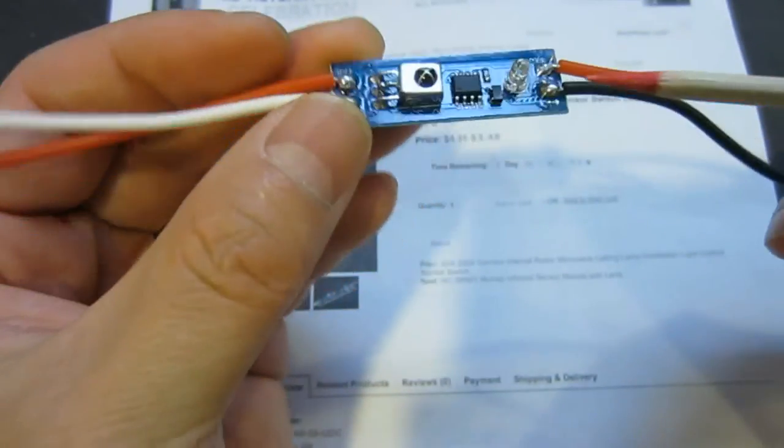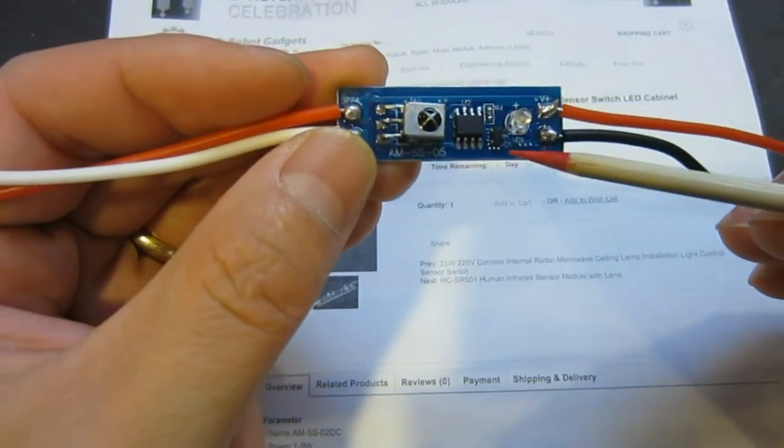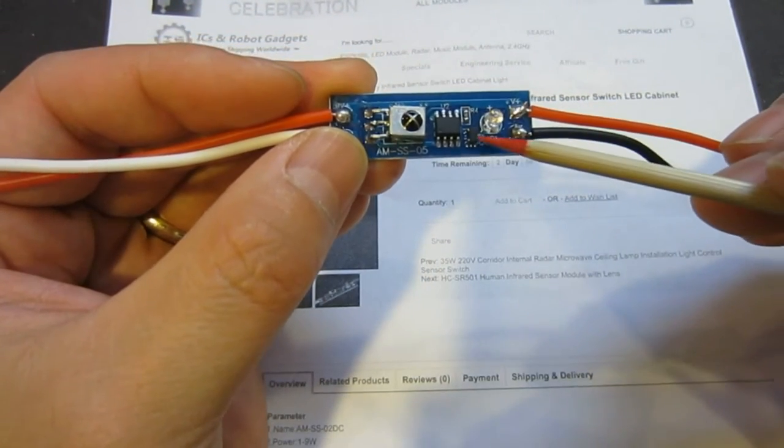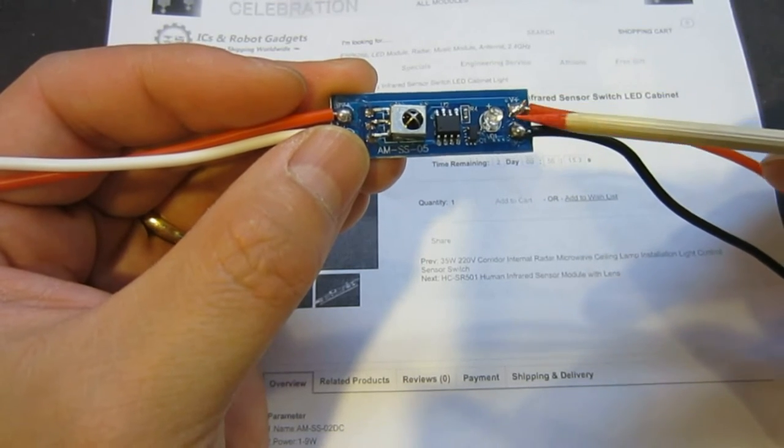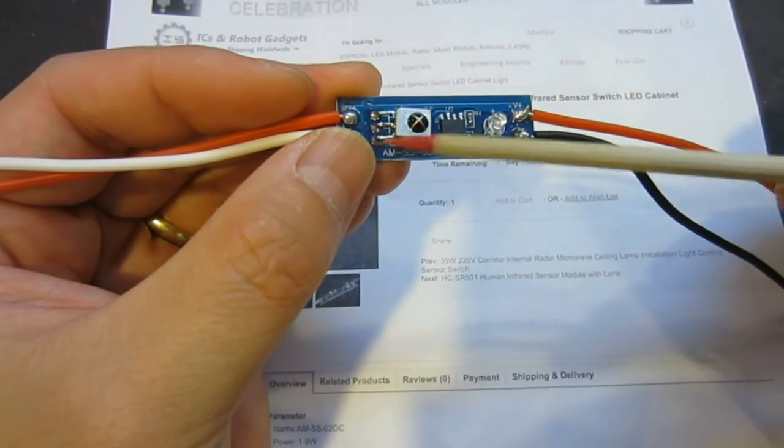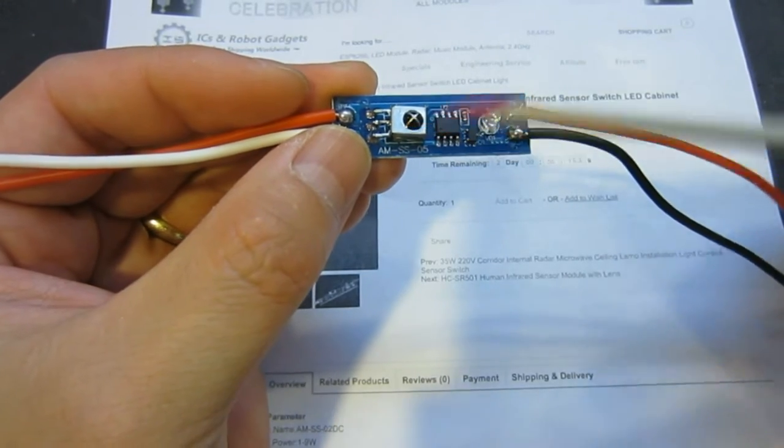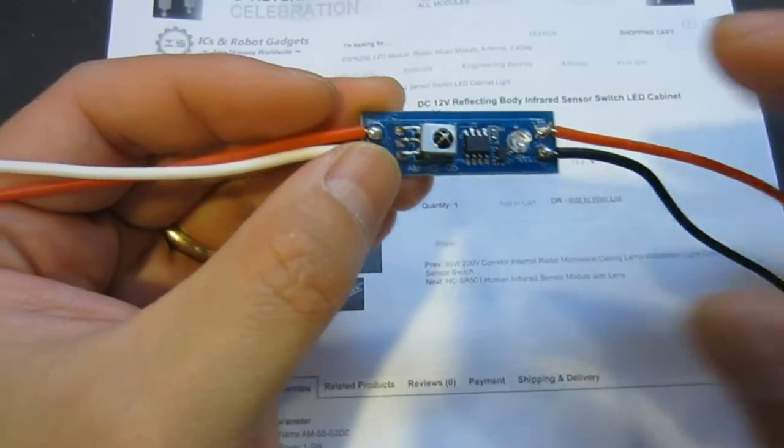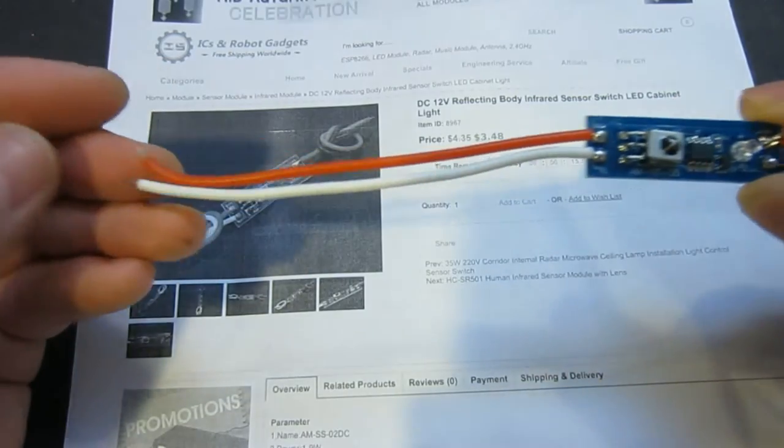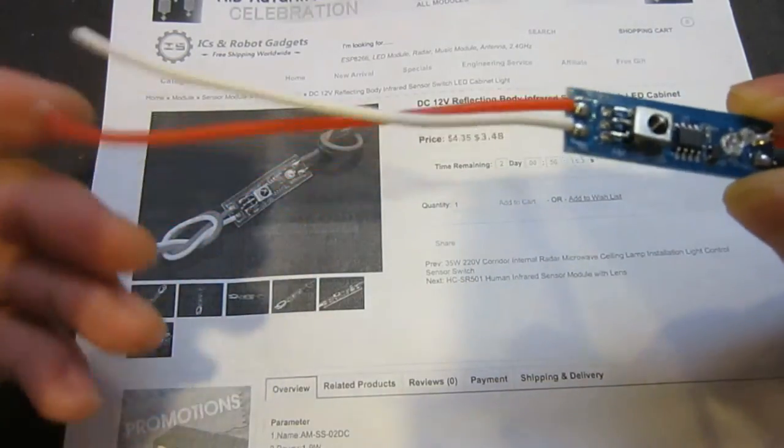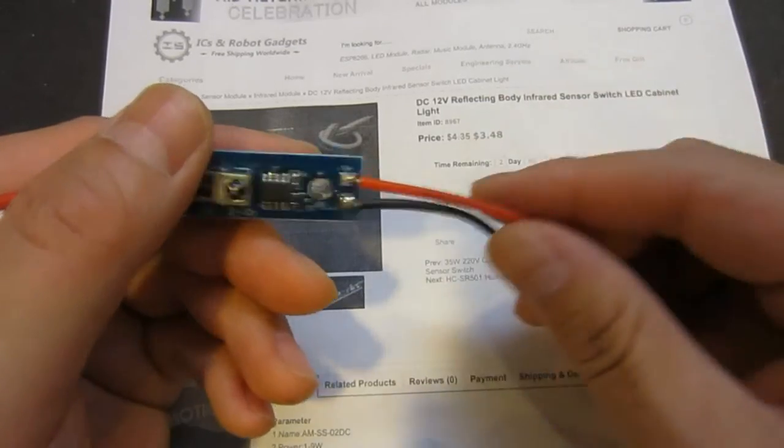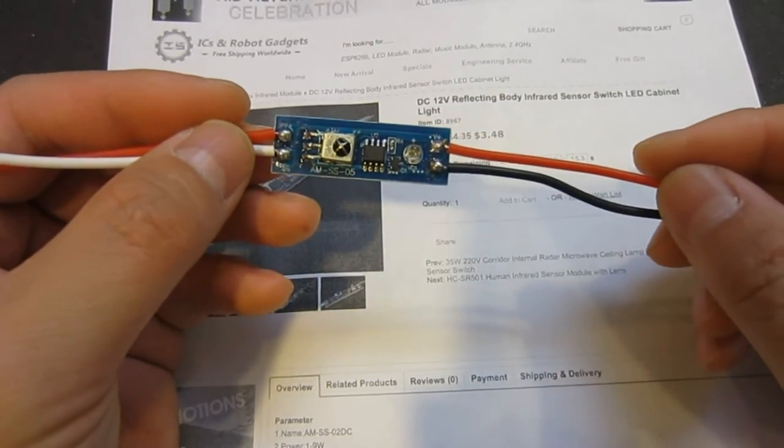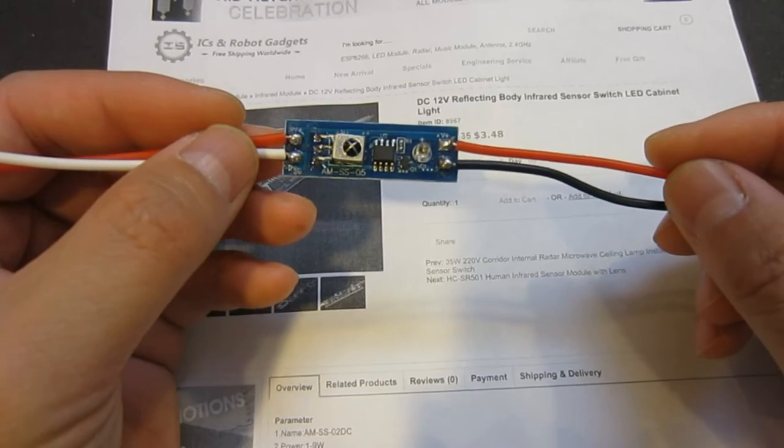So basically Q1 serves as a switch to switch the output depending on the signal received by this IR receiver. So I think just by looking at this circuit, we know that this side is input and this side is the output. So now let's power it up and take a look.